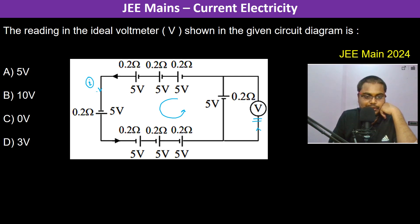When we apply, so we can write: 5 plus 5 minus 0.2i plus 15 minus 0.6i plus 5 minus 0.2i plus 15 minus 0.6i is going to be equal to 0.